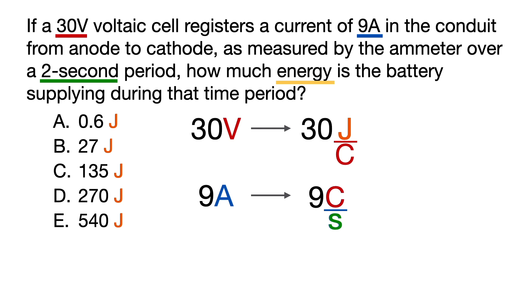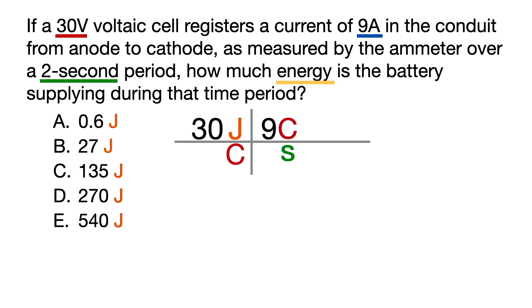So now, simply start dimensional analysis with the 30 joules per coulomb to ensure that the joules is on the top, which is where it has to be if it's going to be in the answer. And then place the 9 coulombs per second next to it so that the coulombs are on top of each other so they cancel out. And then place the 2 seconds next to that so that the seconds are on top of each other so that they cancel out.